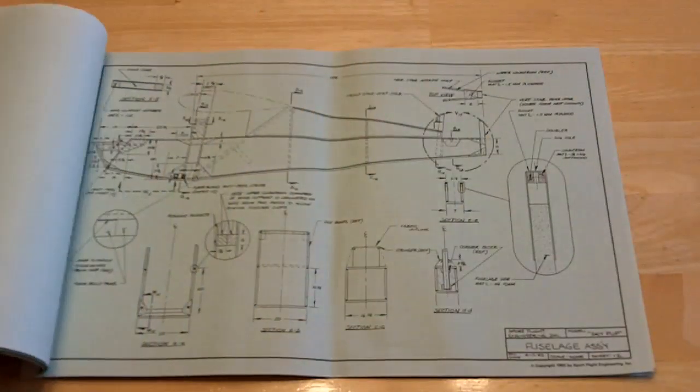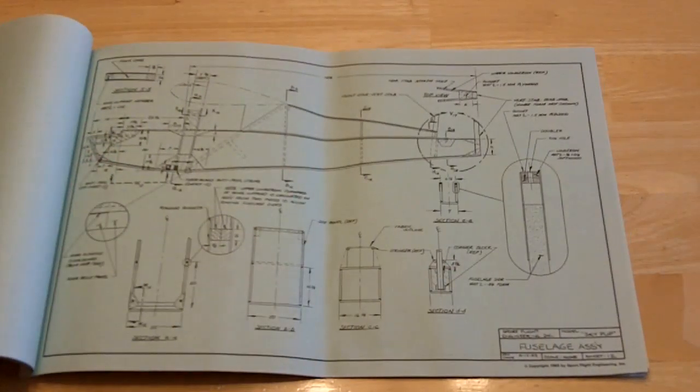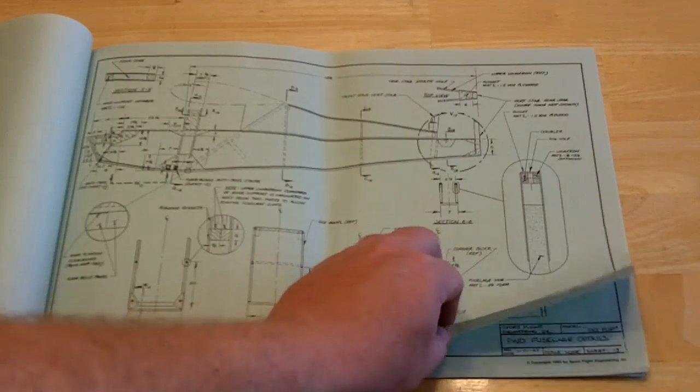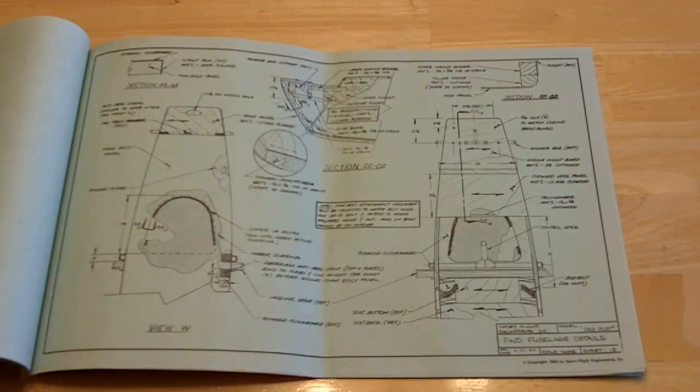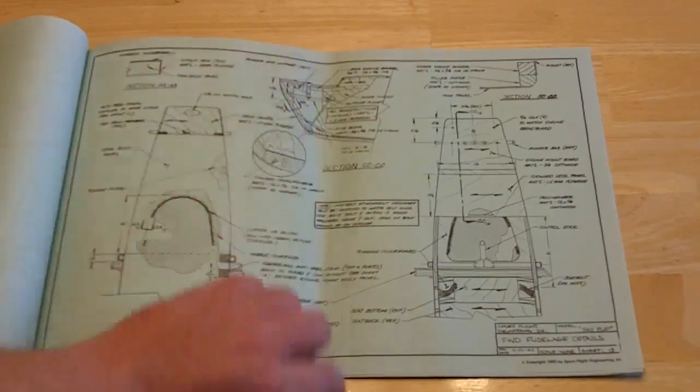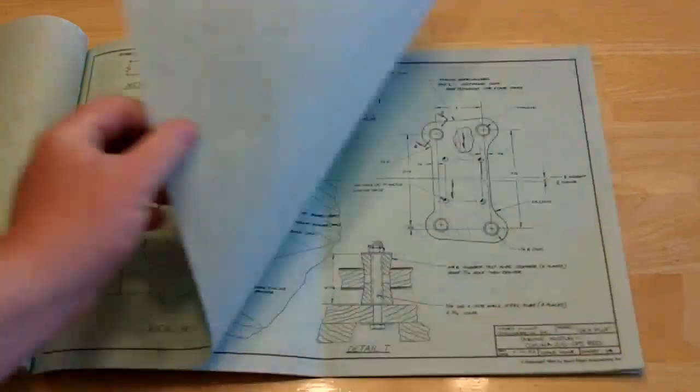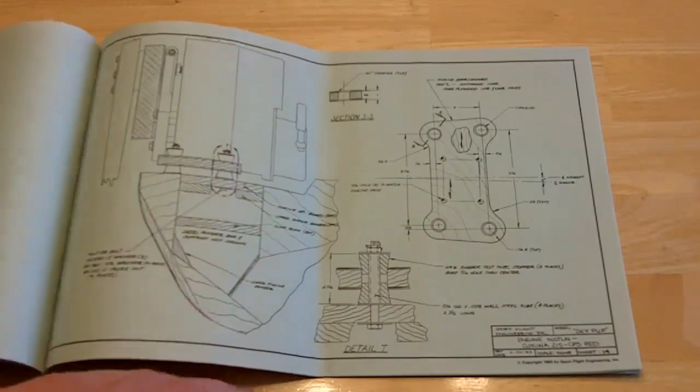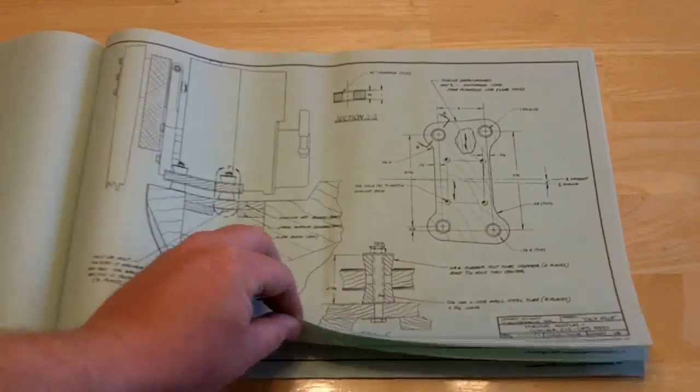Really a nice set of blueprints. There's the first drawing of the fuselage. You can see it's starting to give you all the dimensions and whatnot. As you work your way through, there's the front, the nose. That's the motor mount up here. Here's the engine installation.